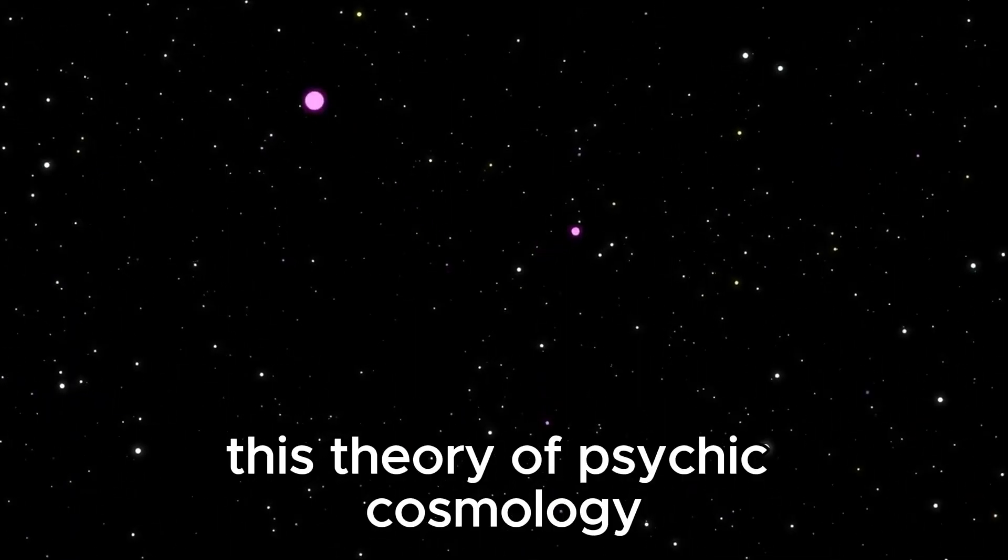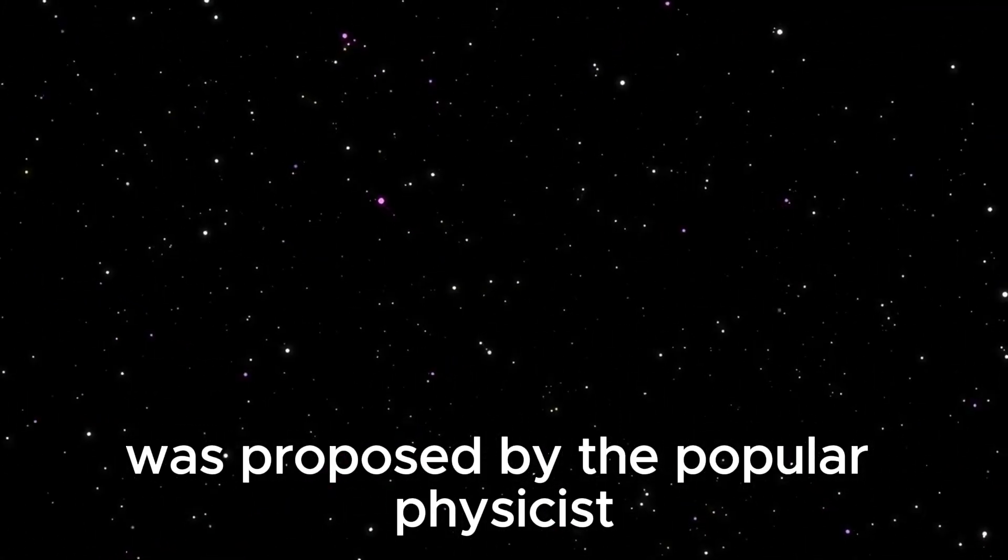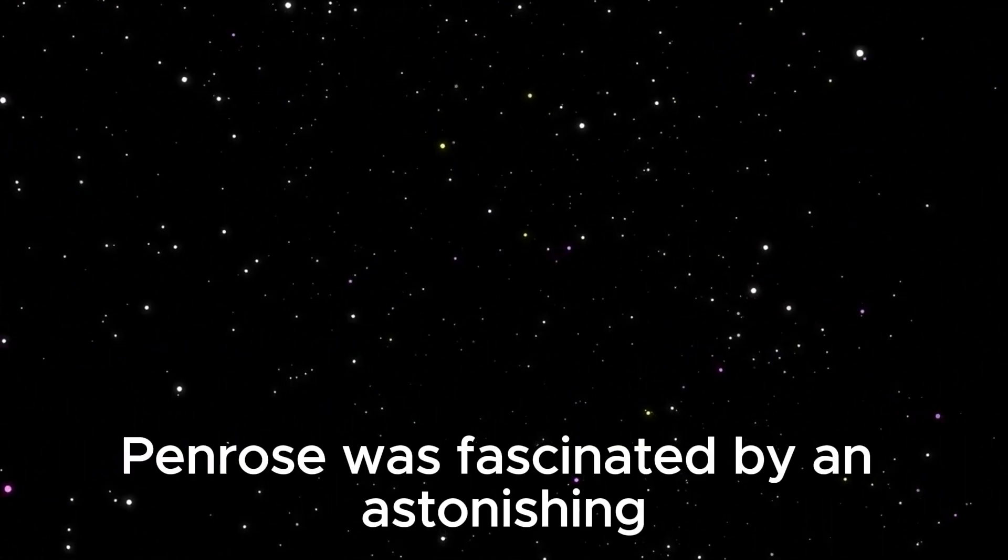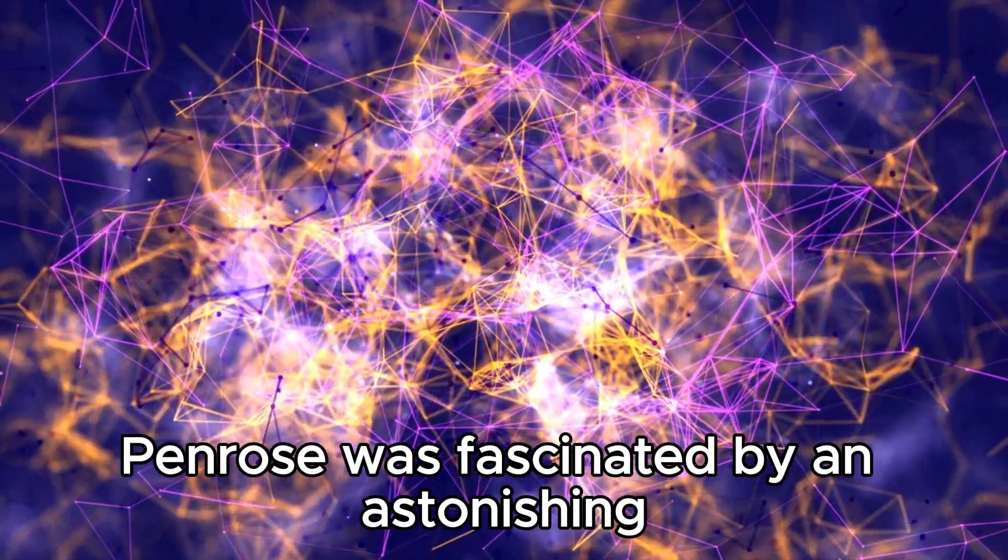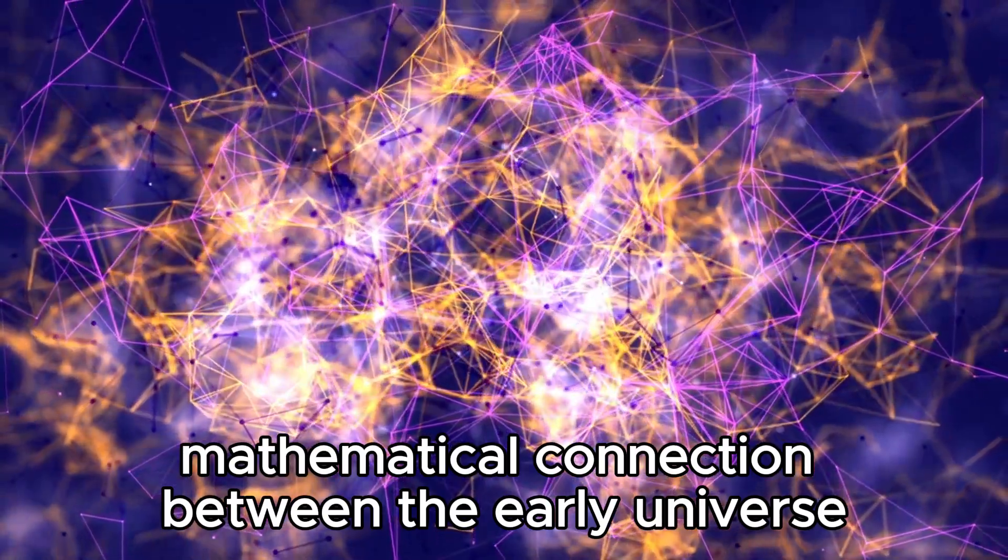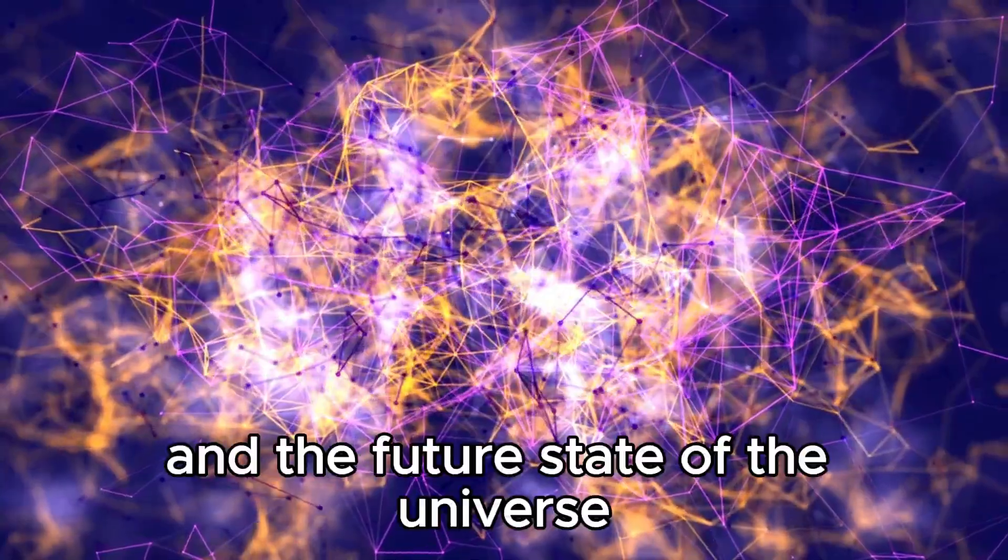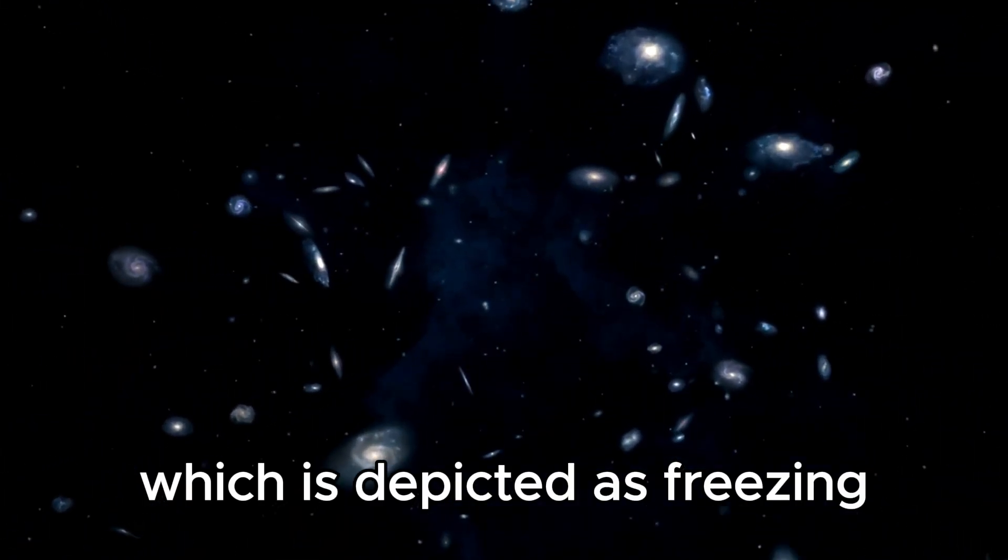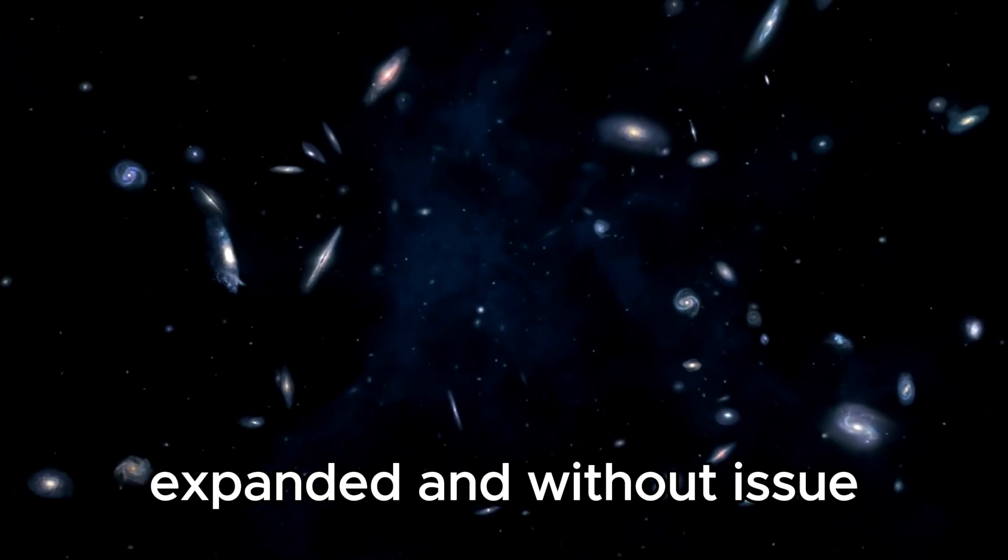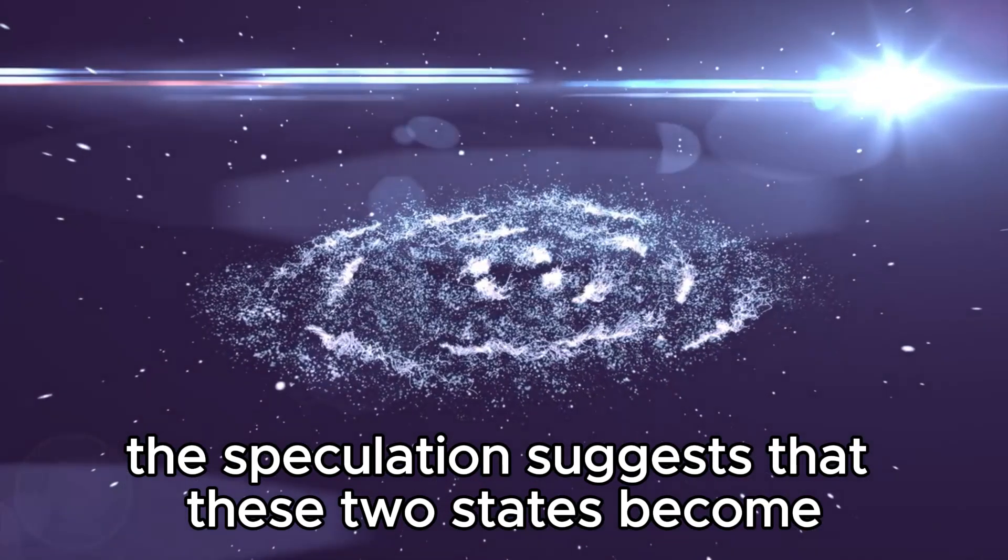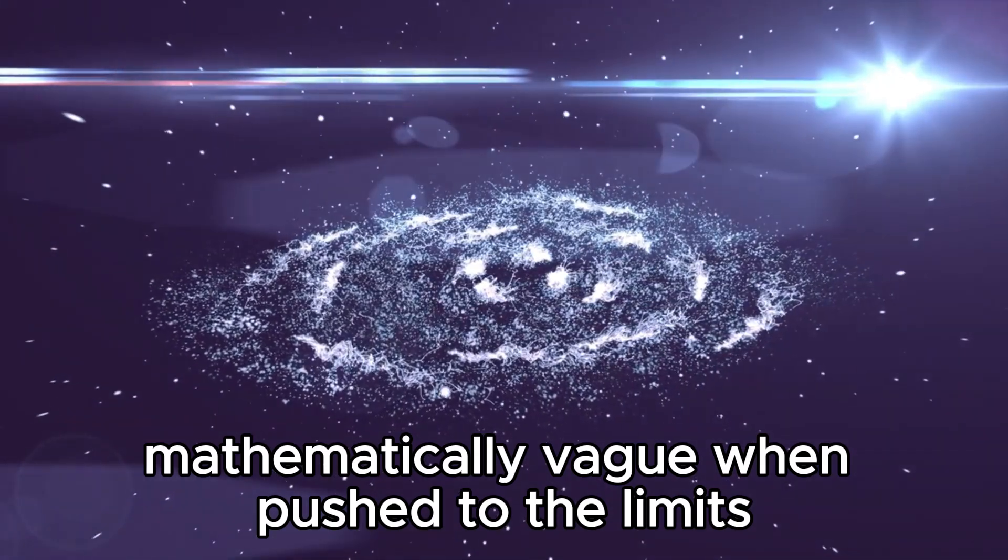This theory of cyclic cosmology was proposed by the famous physicist Roger Penrose, who was awarded the Nobel Prize. Penrose was fascinated by an astonishing mathematical connection between the early universe, described by extreme density and energy, and the future state of the universe, which is depicted as freezing, expanded, and without matter. The theory suggests that these two states become mathematically indistinguishable when pushed to the limits.